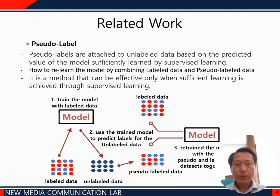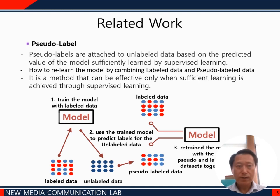Before introducing this paper, let's briefly look at papers that have already been published. The pseudo-label method attaches a pseudo-label to unlabelled data based on the predicted value of a model sufficiently learned by supervised learning, and re-learns the model by combining labelled data and pseudo-labelled data. However, it is a method that can be effective only when sufficient learning is achieved.